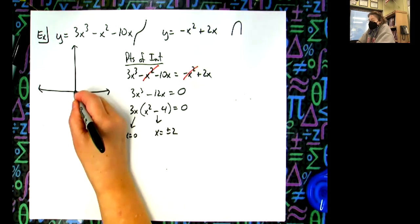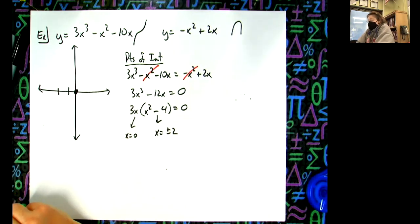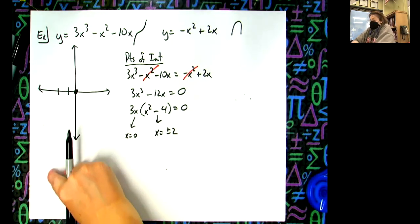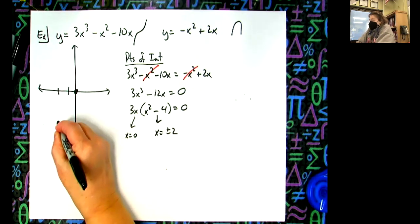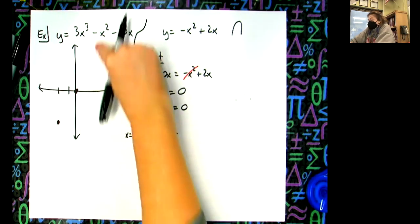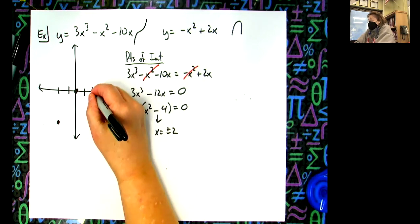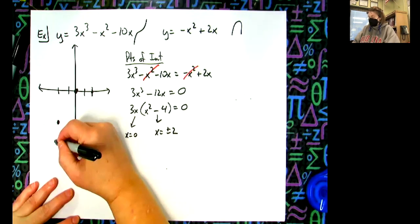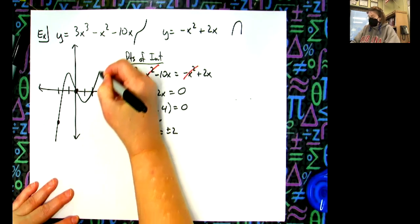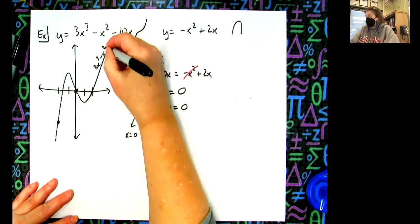So that means I'm going to have an intersection point at zero, an intersection point at negative two and two. But if I've got a cubic, it's going to be down here somewhere, and then my cubic going up that way. Let's do this. How's that for my 3x³ - x² - 10x curve?